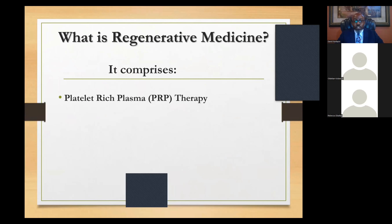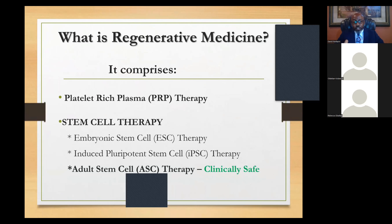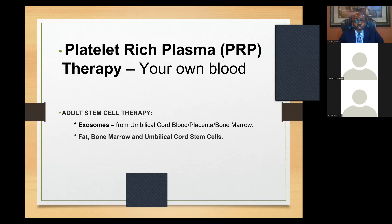Under stem cell therapy there are about three subdivisions: embryonic stem cells, which many countries oppose for ethical and religious reasons; induced pluripotent stem cells, some in research and some already in clinical trial; and adult stem cell therapy. When I say stem cell therapy clinically, I mean adult stem cell therapy. Today we will discuss PRP and adult stem cells — specifically exosomes, fat, bone marrow, and umbilical cord stem cell therapy.